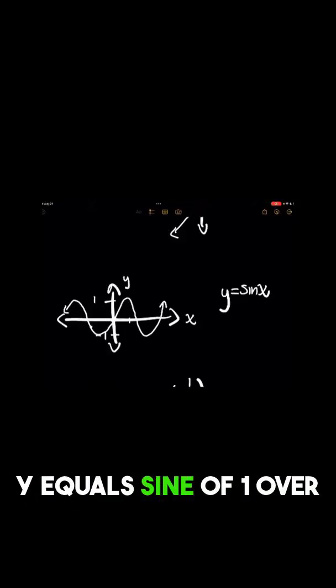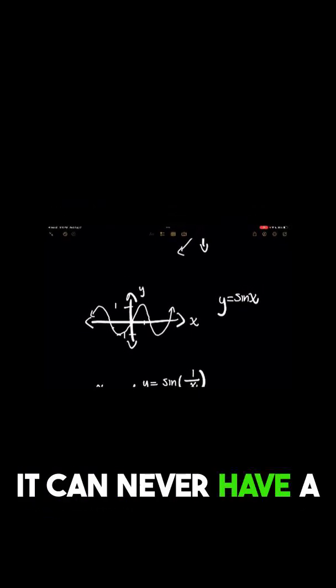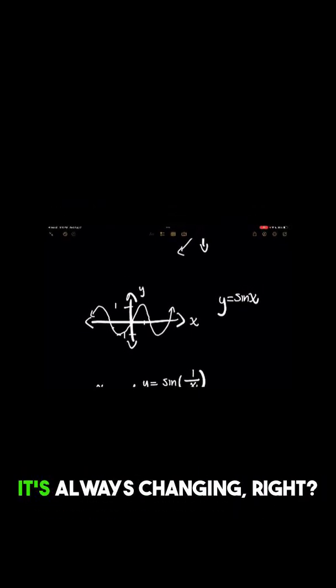Because you might be thinking for y equals sine of 1 over x, if it's an oscillating function, that must mean it can never have a converging limit value because it's always changing, right?